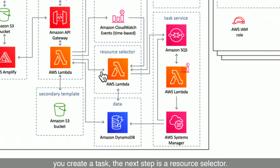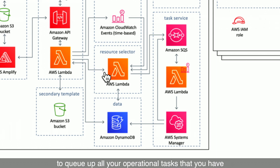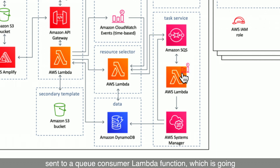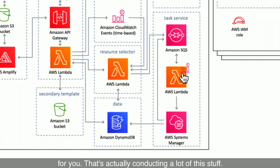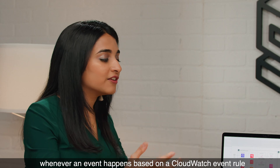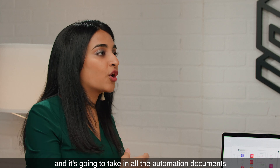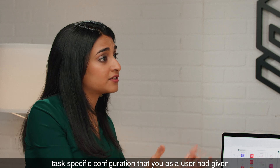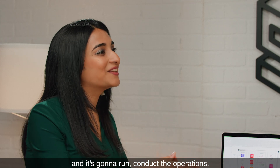When you create a task, a resource selector Lambda function is triggered, which queues up all your operational tasks to be performed on your specific resources and sends these messages to Amazon Simple Queue Service. From SQS, it's sent to a Queue Consumer Lambda function, which takes all that information and runs the automation. This is triggered whenever an event happens based on a CloudWatch event rule, pulling automation documents from AWS Systems Manager and applying task-specific configuration to conduct the operations.